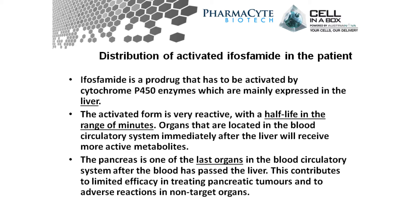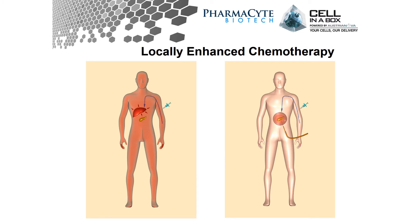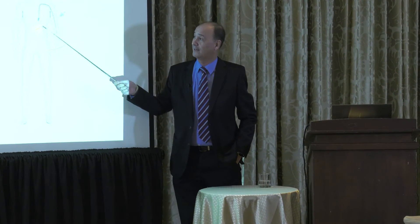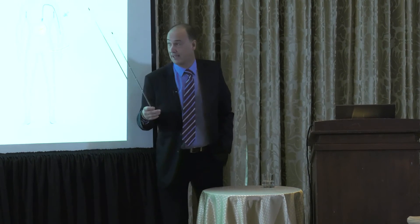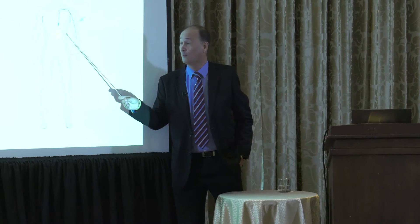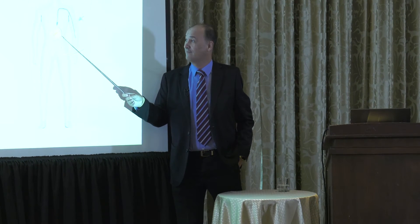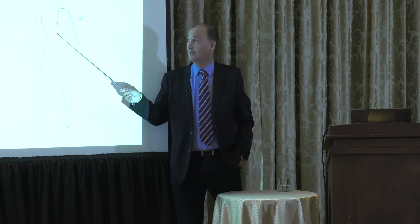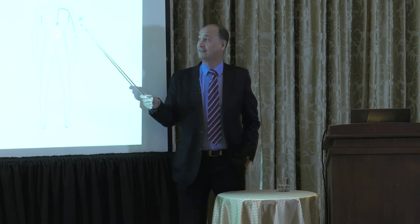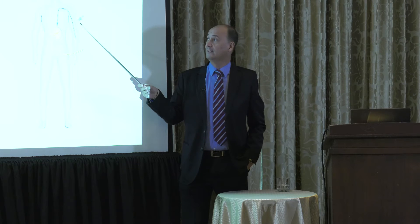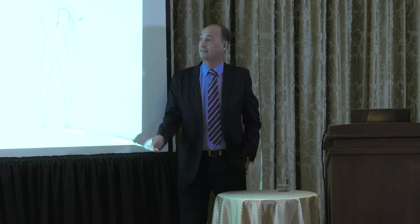The pancreas is one of the last organs on the circulatory system starting out from the liver. By the time the metabolites get to the pancreas or a pancreatic tumour, they're in vanishingly small quantities. Our idea was to create an activation site at the site of the tumour — to use cytochrome P450-expressing encapsulated cells, place them right next to the tumour, and get that conversion to happen right there. This should give very high local concentrations of anti-tumour metabolite, better tumour killing, and allow a lower dose of chemotherapy, thus reducing side effects.